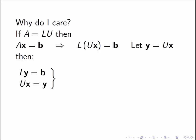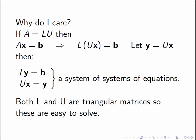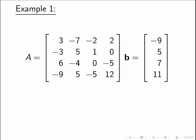And if I make the substitution of letting y equal U times x, then I can rewrite the system of equations Ax equal to b as a system of systems of equations. Ly is equal to b, and Ux is equal to y. This is a system of systems of equations where both L and U are triangular matrices, which means they have lots of zeros, and L has got ones in all of the pivot positions, and so it makes things a lot easier to end up solving.